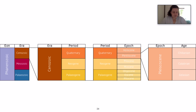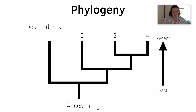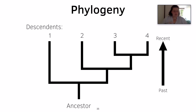You may also hear the term chron thrown around — this is an extremely small unit of geological time. And finally we move on to phylogeny, which is the relationship between all life on Earth that has descended from a common ancestor.